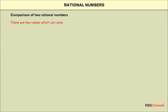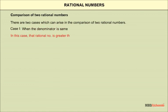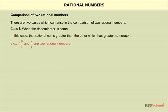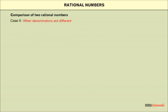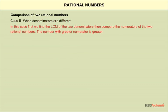There are two cases in the comparison of two rational numbers. Case 1: when the denominators are the same, the rational number with the greater numerator is greater. For example, if p/q and r/q are two rational numbers and p > r, then p/q > r/q. Case 2: when denominators are different, first find the LCM of the two denominators, then compare the numerators. The number with the greater numerator is greater.